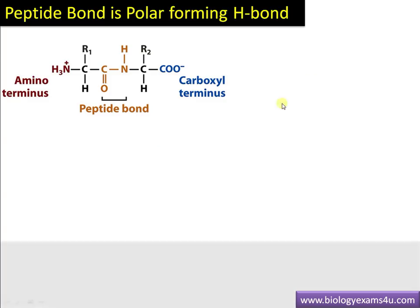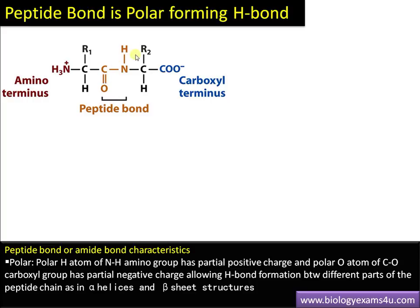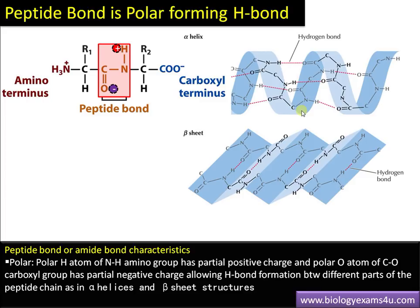The peptide bond is polar, forming hydrogen bonds. In the peptide bond, the hydrogen in NH carries a slight positive charge, and the oxygen carries a slight negative charge. This polarity is one reason for the secondary structures in proteins — alpha helices and beta sheets. The NH and C=O form hydrogen bonds that connect farther regions of a polypeptide, and in beta sheets, two linear structures are connected by hydrogen bonds.